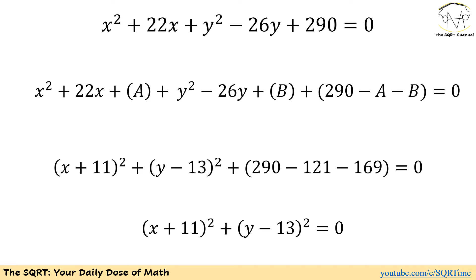So here we are going to write it as (x + 11)². We are going to use the same approach and write y² - 26y plus the constant B as (y - 13)².